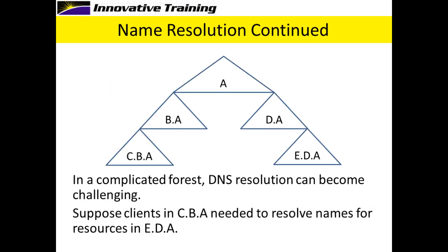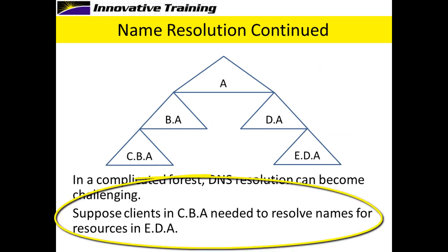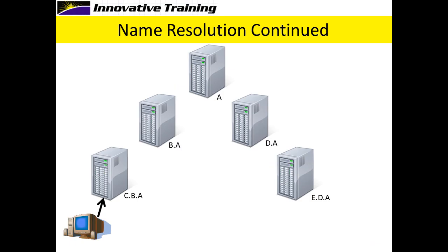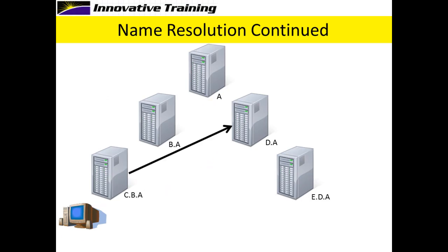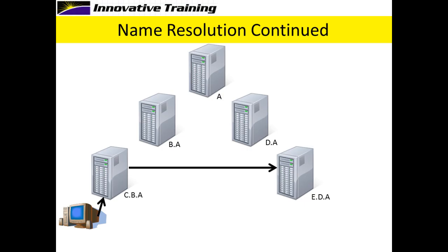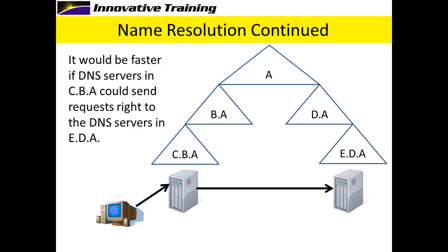Another reason might be because we have a very complicated forest structure. Suppose clients in CBA very frequently need to resolve names for resources in EDA. The client contacts their DNS server in CBA, which would need to forward up to domain A at the top of the tree to ask how to get to EDA. A has a delegation for DA and sends that back to CBA, which then contacts DA, which has a delegation down to EDA, and finally CBA can contact EDA. It would be a lot faster if the client's DNS server could send the request right to the DNS servers in EDA and have the answer come directly back.